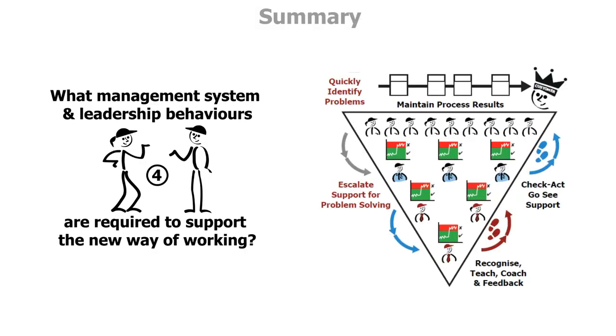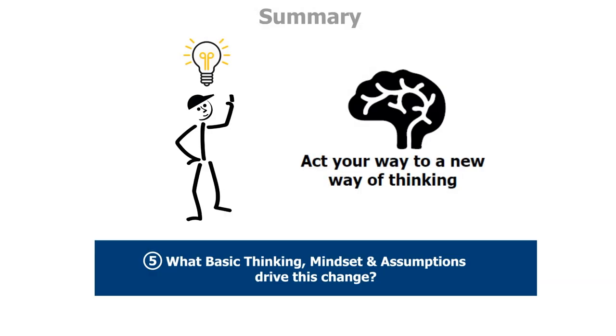Number four, what management system and leadership behaviors are required to support the new way of working to develop the capabilities to do and improve the work to solve the problem to achieve the purpose? And finally, number five, what basic thinking, mindset, and assumptions drive this change? Where are we today versus what we need it to be?